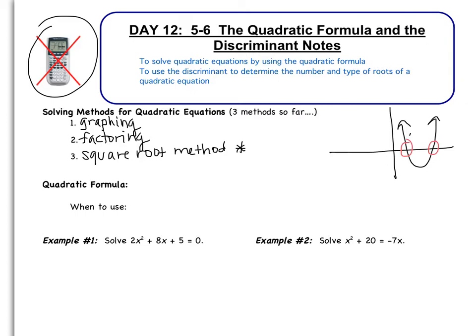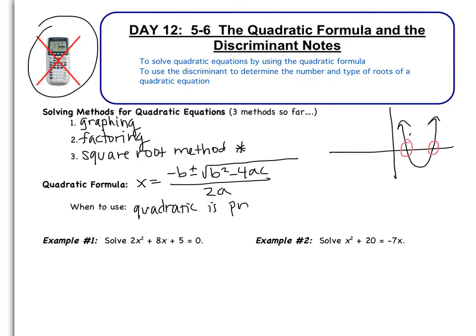The quadratic formula has a song that goes along with it, so I'm going to sing it for you — I'm not the best singer, just a warning. The quadratic formula says x equals the opposite of b, plus or minus the square root of b squared minus 4ac, all over 2a. When do we use the quadratic formula? We use it when the quadratic is prime, meaning when it does not factor. The equation also has to be set equal to 0.